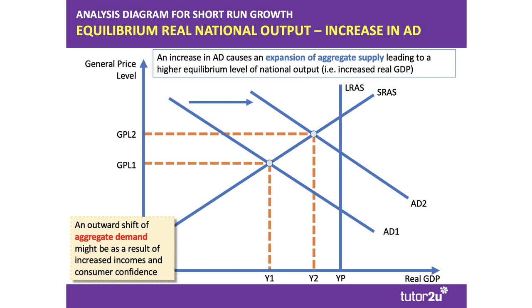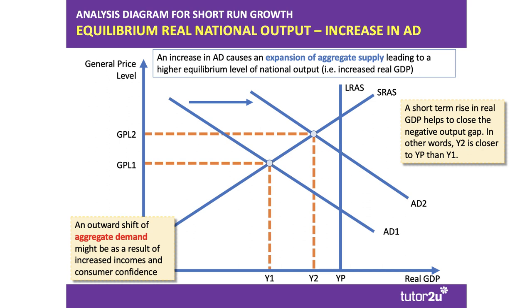And if we put in the long-run aggregate supply curve — potential output — we can see that in the short term, if the economy is growing more quickly than productive potential, that is going to help close a negative output gap.